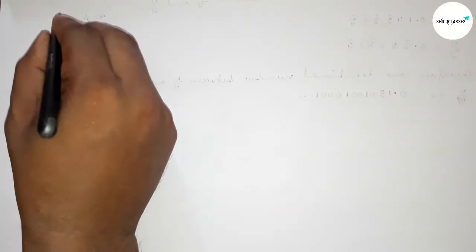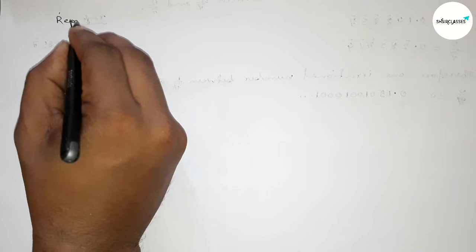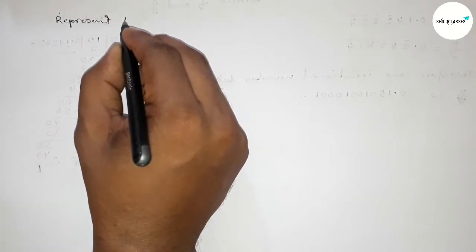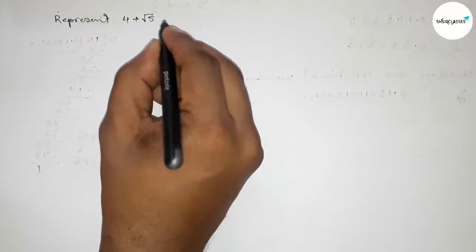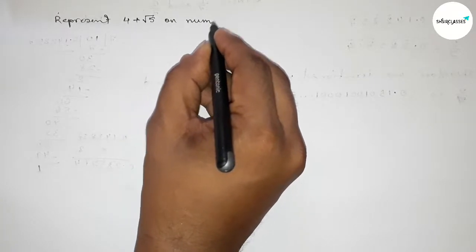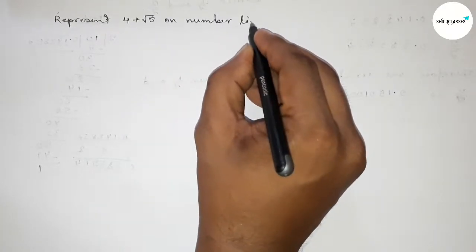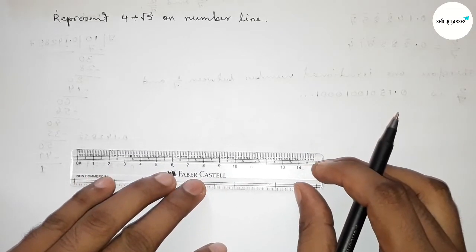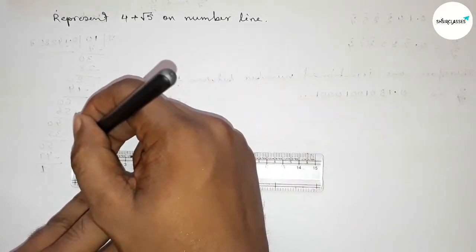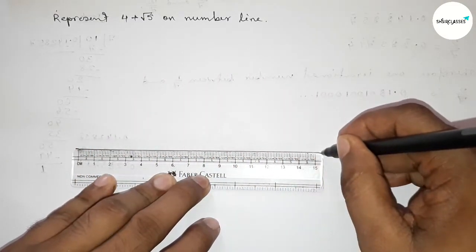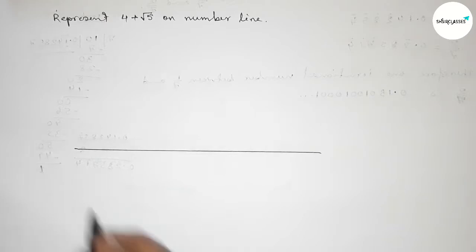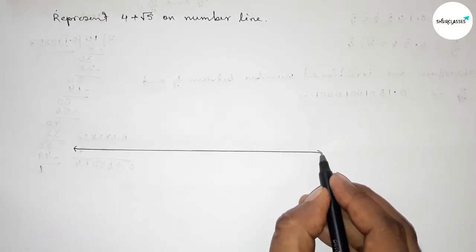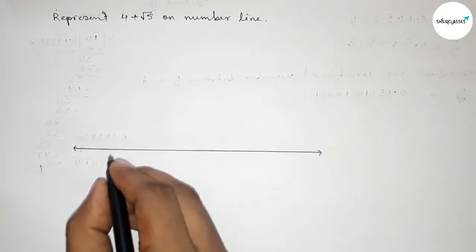Hi everyone, welcome to Size Share Classes. Today in this video we have to represent 4 + √5 on a number line in easy way. So let's start the video. First of all, we have to construct a number line here, so first drawing here a line of any length and taking arrow marks on both sides.